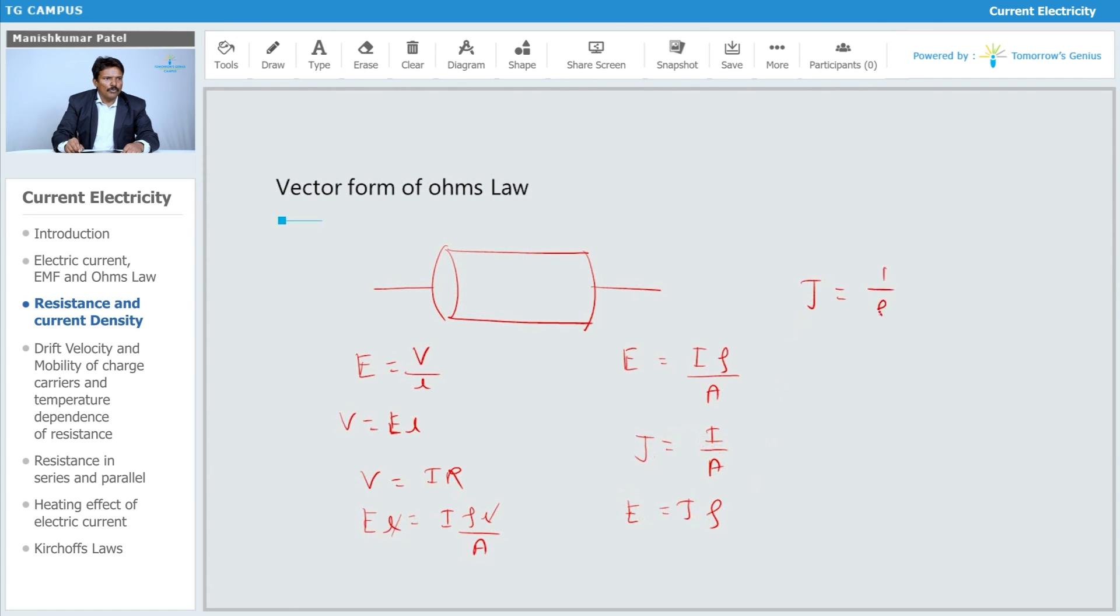This J is equals to 1 upon rho into E. So this J is nothing but sigma into E bar. This is how we can express the vector form of Ohm's law.